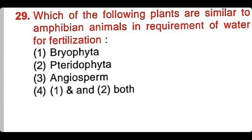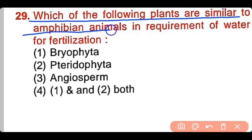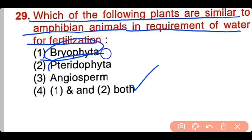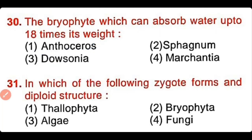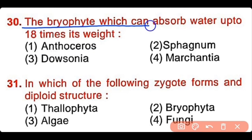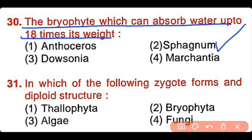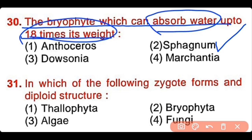Question number 29: Which of the following plants are similar to amphibian animals in requiring water for fertilization? Bryophyta, Pteridophyta, Angiosperm, or both 1 and 2. The correct answer is option 4 — both bryophytes and pteridophytes need water for fertilization. Question number 30: Which bryophyte can absorb water up to 18 times its weight? Anthoceros, Sphagnum, Dawsonia, or Marchantia. The correct answer is option 2. Sphagnum moss has the ability to absorb water more than 18 times its weight.